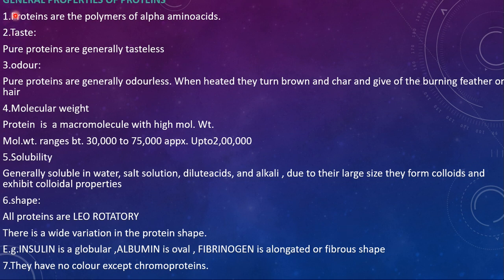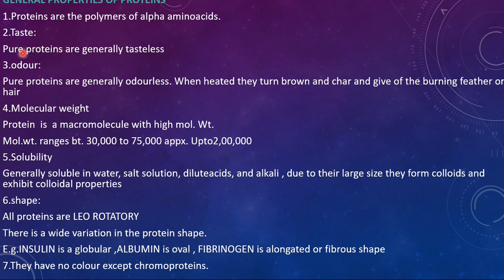The first property is that proteins are polymers of alpha amino acids. While defining proteins, we have learned that amino acids are the building blocks of protein, so that becomes your first property of protein. Coming to the taste, pure proteins are generally tasteless, and coming to the odor, pure proteins are generally odorless.